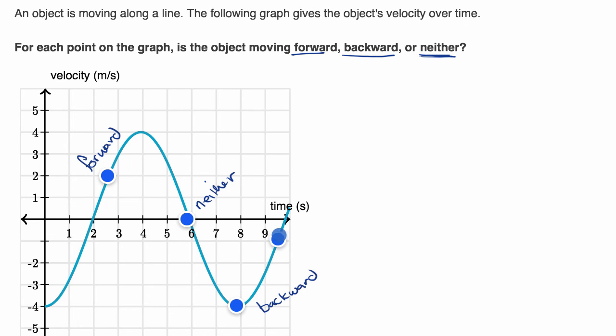And here, our velocity is still negative. It's becoming less negative, but it's still negative. So we are still moving backward. If we were at this point right over here, or at this point, then we would be moving forward if our velocity were positive.